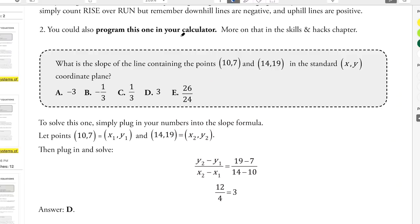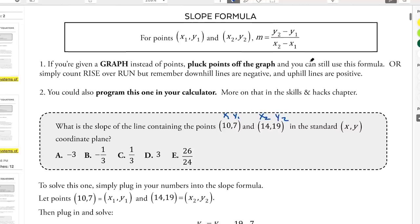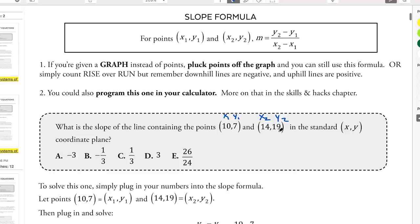So let's take a look at this problem. It's a pretty basic problem. What is the slope of the line containing the points (10, 7) and (14, 19) in the standard XY coordinate plane? Super easy, simple, straightforward problem. If you have a calculator program on your TI-84, you literally just enter these numbers, and it's super easy. If you don't have that calculator program, then you just apply this formula, which is really simple.